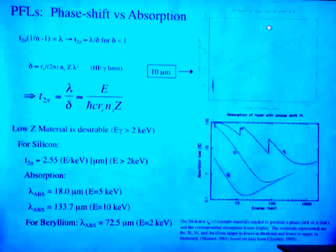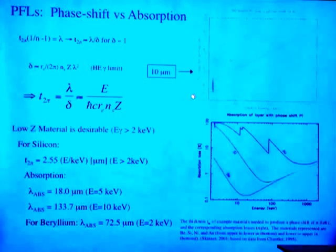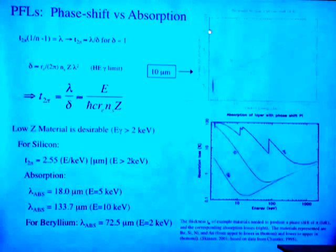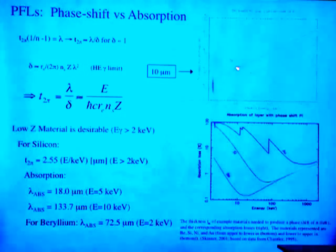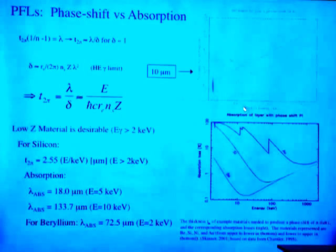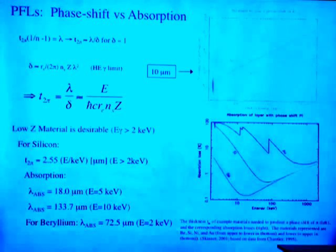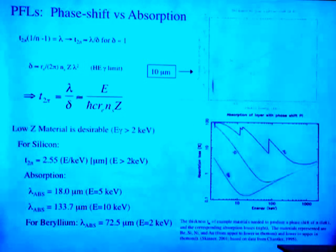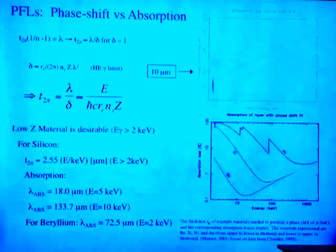This plot shows the thickness needed as a function of energy for various materials — nickel, silicon, beryllium, and gold — as a function of thickness in decades. In the keV range, you need tens of microns for materials like silicon and much less for gold. What's also important is how much absorption you can tolerate, which is also material-dependent. This plot shows absorption loss in percent as a function of energy for the material to achieve a phase change of pi. At lower energies one needs to work with silicon or even beryllium, but silicon is rather easy to fabricate.